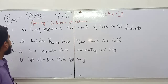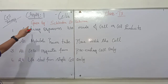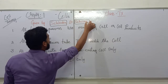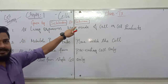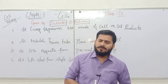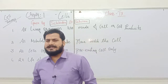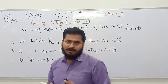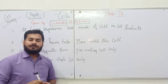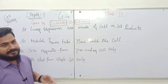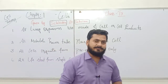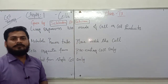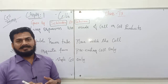Cell theory was given by two scientists, Schleiden and Schwann. Though there are many controversies around the names Schleiden and Schwann, these two scientists are credited for giving cell theory. There are also many other scientists, such as Virchow, who gave very important contributions to the framing of cell theory, but Schleiden and Schwann are credited for it.